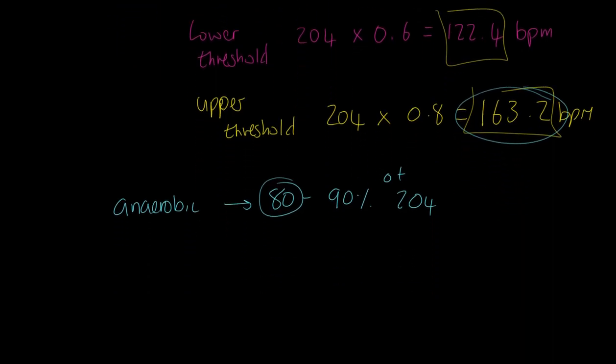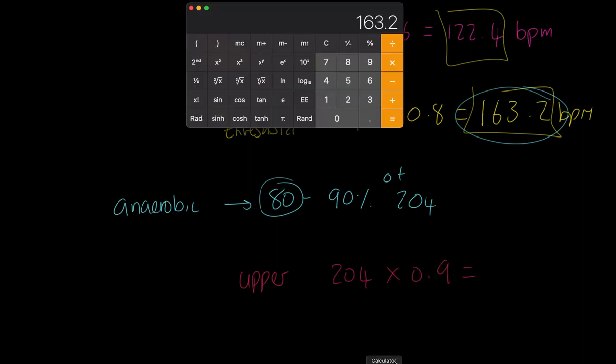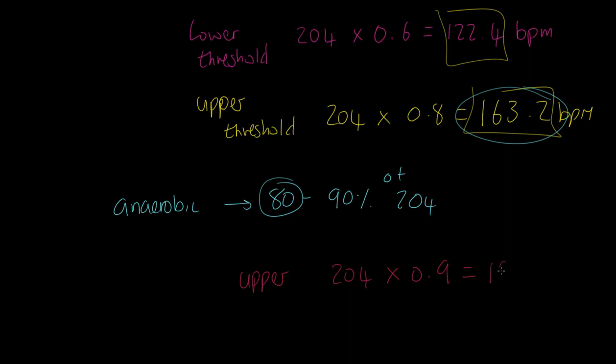So now what we would need to do is go okay, we need to calculate the upper threshold of the anaerobic, and we would say in this case the upper would be 204 times 0.9. And of course that would equal, if we grab our calculator, 204 times 90% equals 183.6.